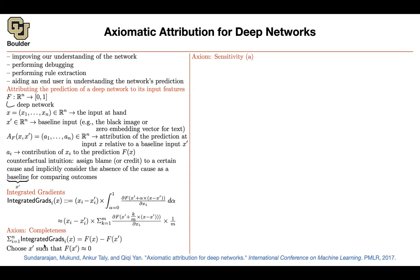It's going to, because of this completeness axiom, you're going to satisfy some sensitivity property. What is that? If you choose a pair of input and a baseline, that they only differ in one feature, in one pixel, but they give you different predictions. So you change one pixel, and they're going to give you different predictions.